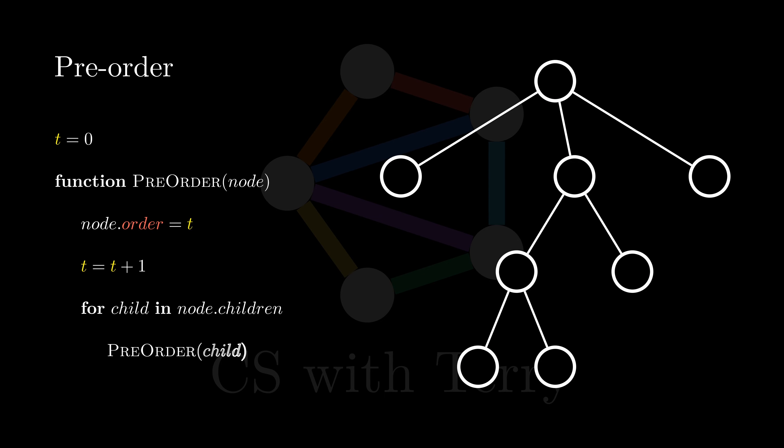This is the pseudocode of pre-order traversal. Let's take a look. First, we'll need a global variable t, which will be used to record the index of the pre-order traversal. Next, we design a recursive function pre-order for pre-order traversal, and pass in a node. At the beginning of this function, we assign index t to the node and let t increase by 1. Then, we recursively call the pre-order function for each child of the node, which assigns indexes to the child nodes. This is the recursive function for pre-order traversal. Of course, we need to execute the pre-order function on the root node to perform a pre-order traversal of the entire tree.